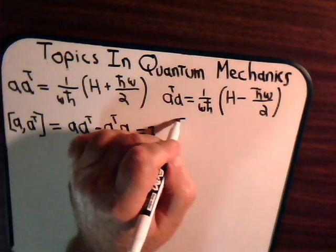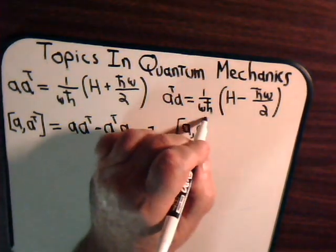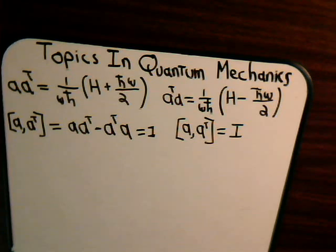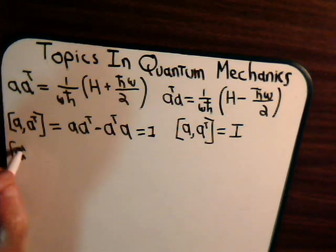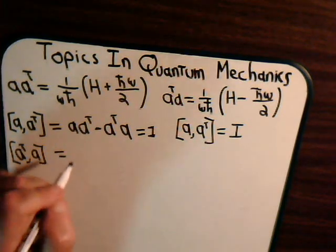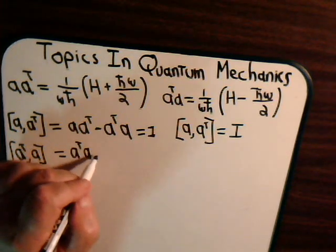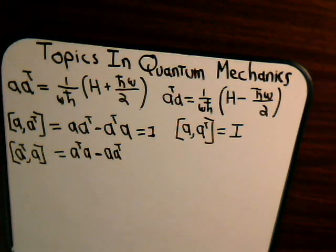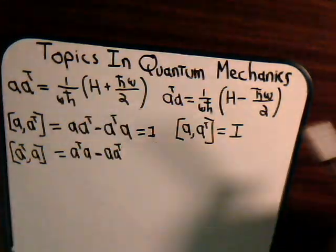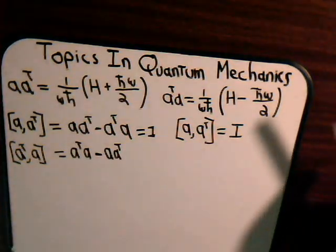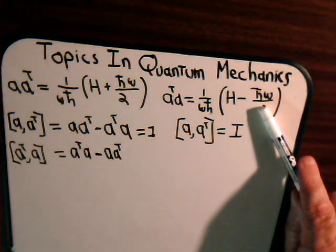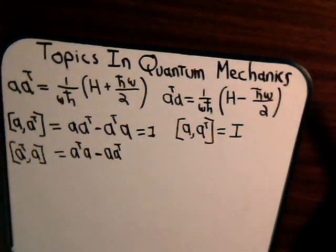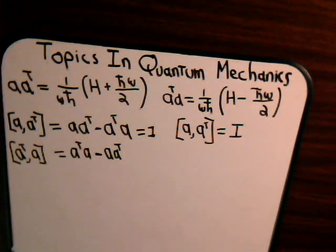Sometimes you see it written in books that the commutator a a-dagger equals the identity element. Now what happens if we had the commutator a-dagger a? That would be this minus this. The Hamiltonians are going to cancel. We have minus this quantity plus minus this quantity. That's going to give us negative h-bar times omega divided by h-bar omega, and that will be equal to negative 1.